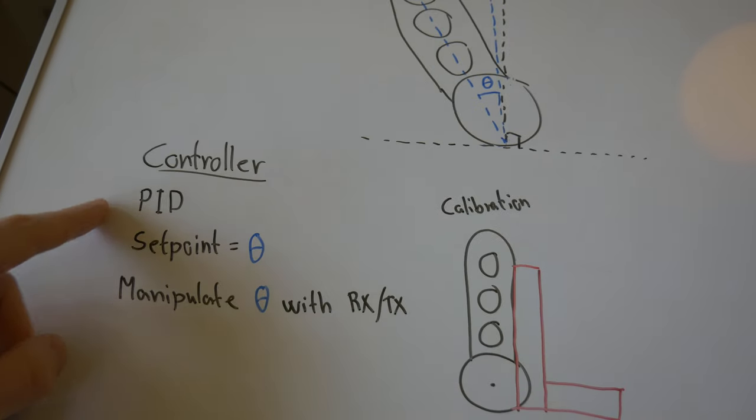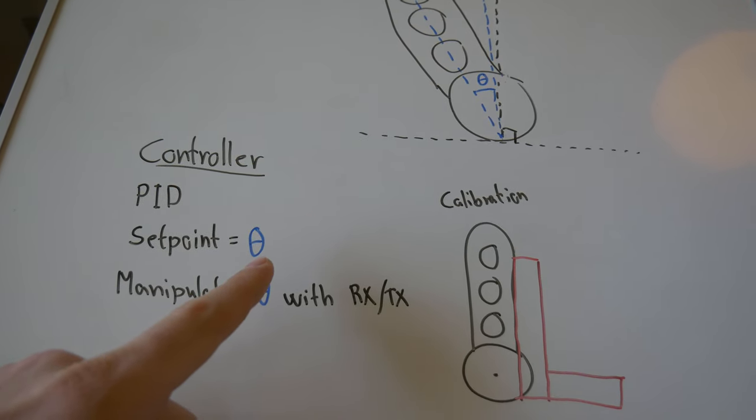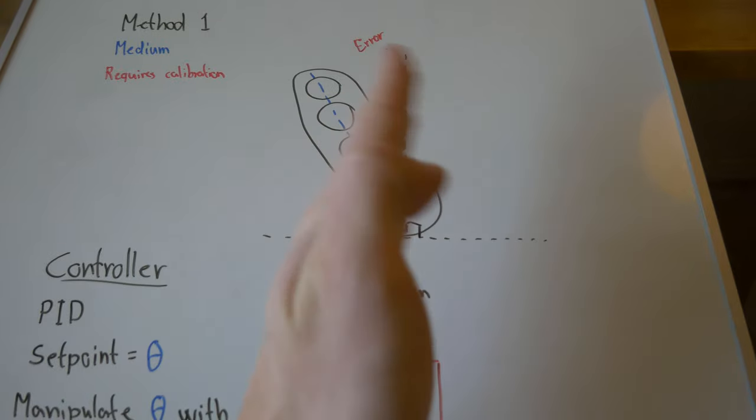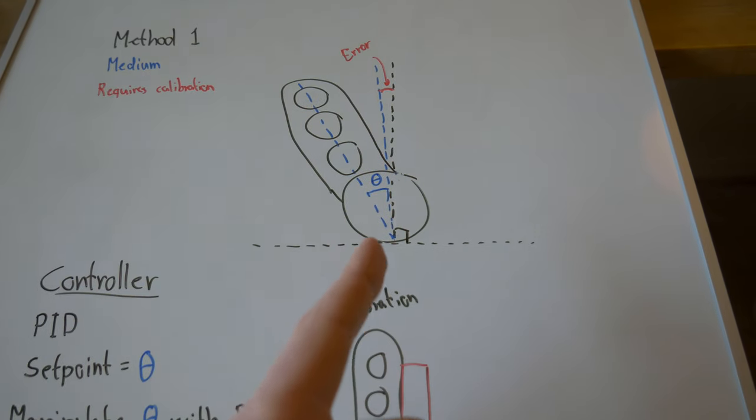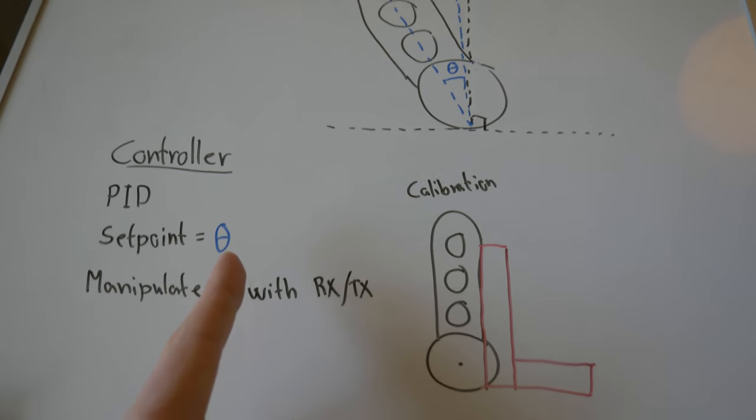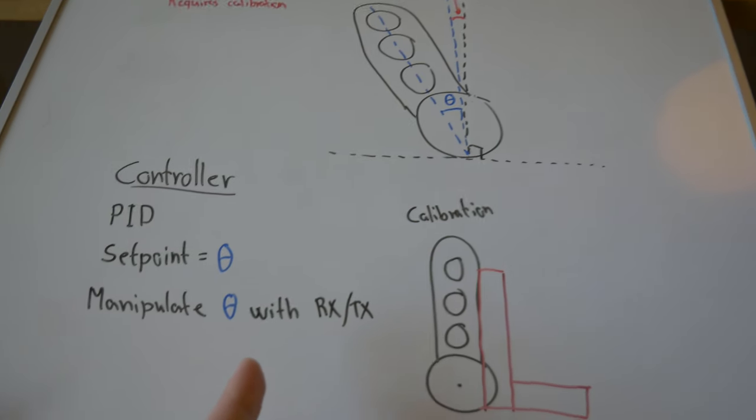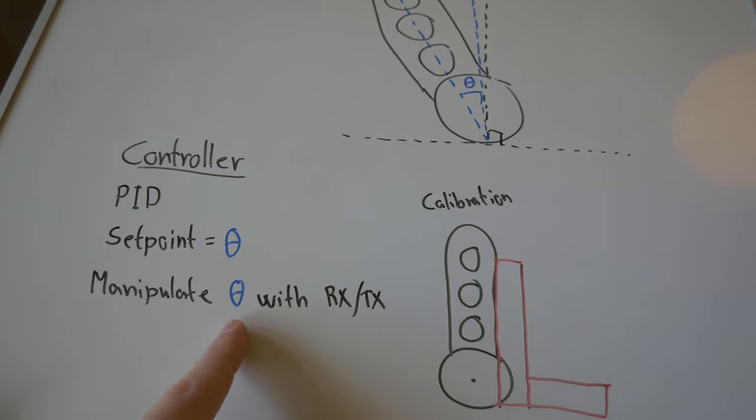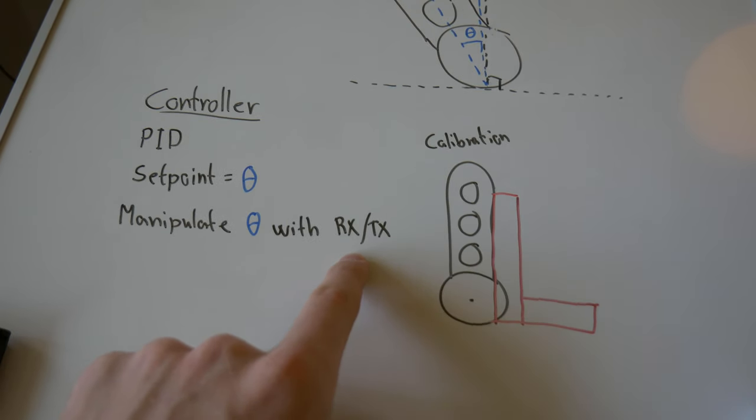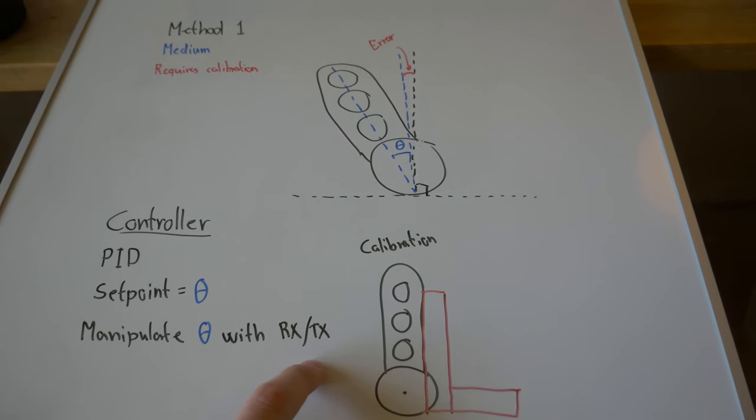To control this, we will use a PID controller where the setpoint is big omega, which is basically the absolute angle of the vehicle. After we have done the calibration, this is going to be with almost no error compared to the absolute gravity vector. Then we can manipulate this angle using the radio transmitter and receiver, and that way we can control the vehicle.